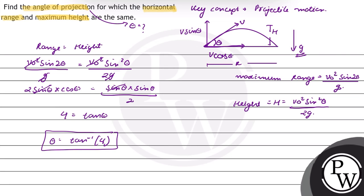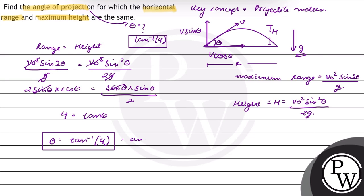So the angle of projection is equal to tan inverse of 4. Hope you understood this well. Best of luck.